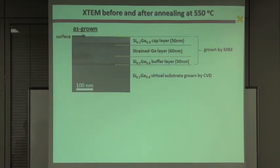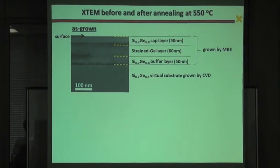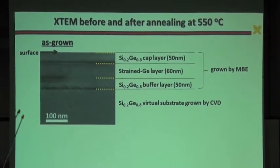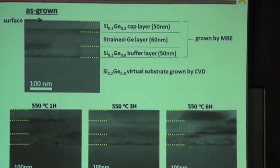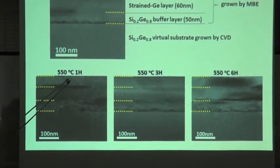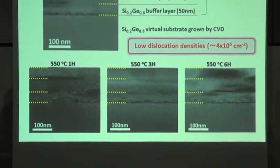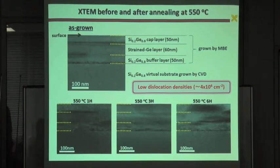And strains are easily relaxed during annealing due to the creation of dislocations. So we examined all of the samples with cross-section transmission electron microscopy, or XTM, before and after diffusion annealing. This is the XTM image for as-grown samples. And here is the surface and cap layer, strained germanium layer, buffer layer, and virtual substrate. And these are after diffusion annealing at 550 degrees for 1 to 6 hours. And these observations show low dislocation density, which did not play any significant part in the diffusion processes, remains through diffusion annealing.